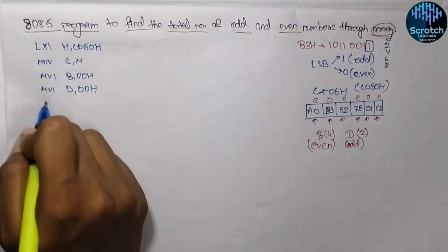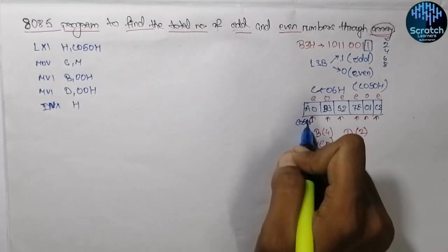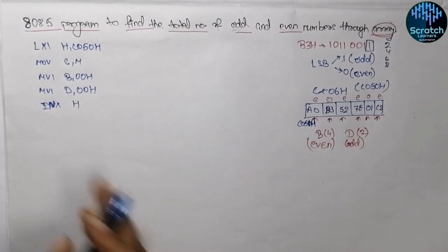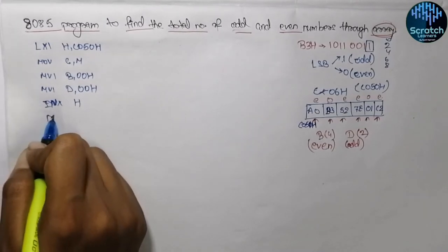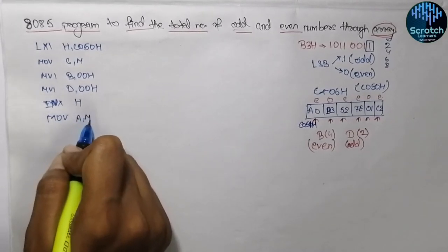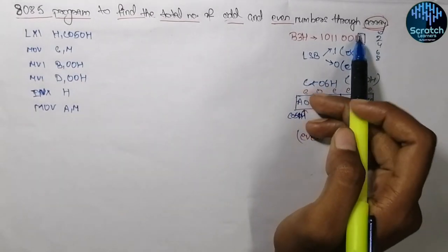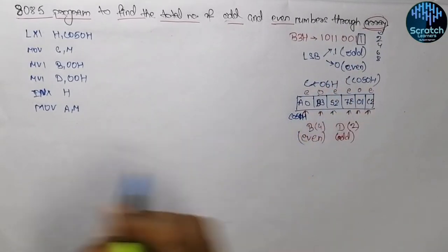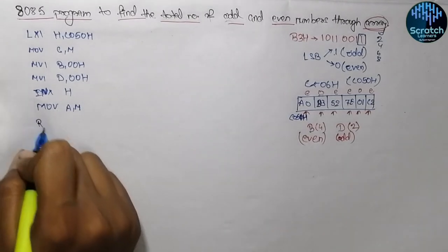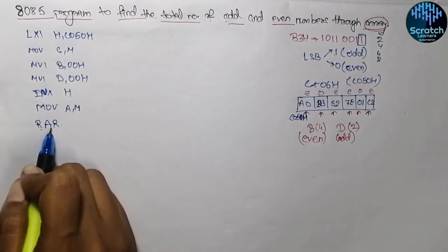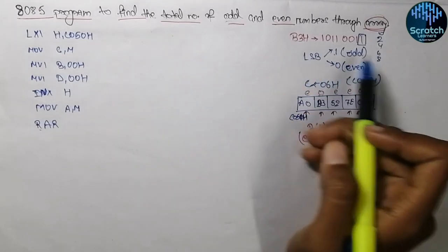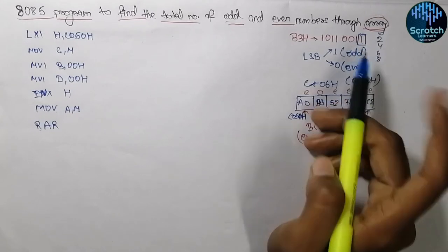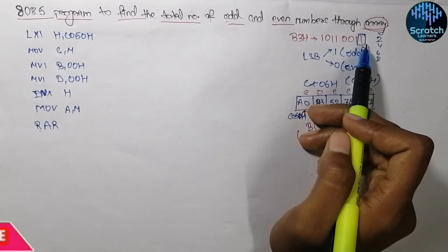To input the first data we use INX H, so the first element A will be read from address C051 hex. We move this content into the accumulator. To check whether the least significant bit is 1 or 0, we use the RAR instruction — rotate accumulator right. After rotating right, if the LSB was 1 then the carry flag will contain 1, and if it was 0 then the carry flag will also be 0.